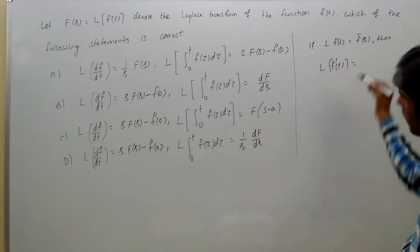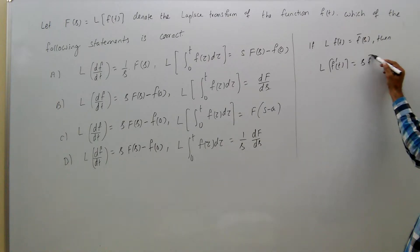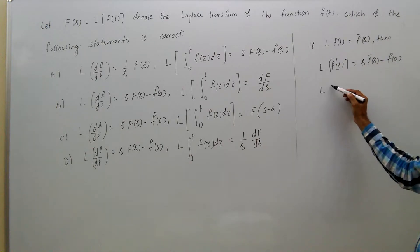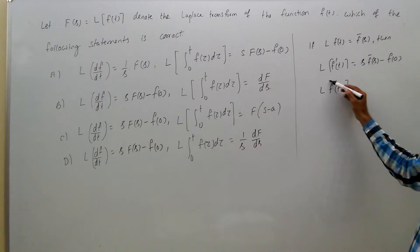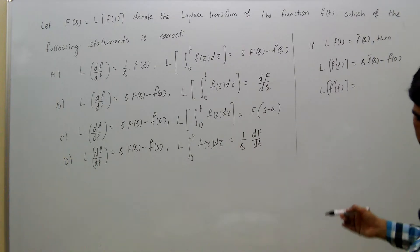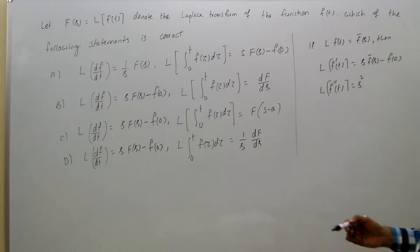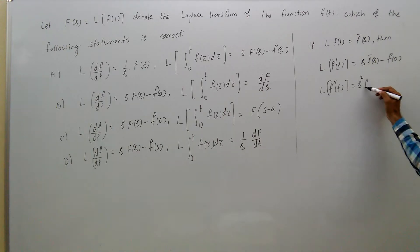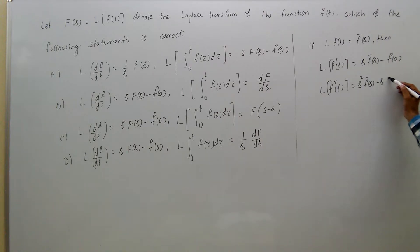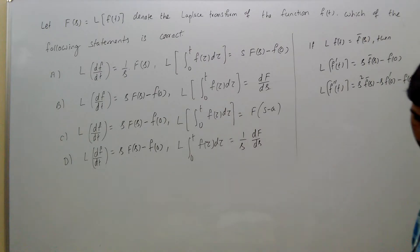If Laplace transform of F of t equals F-bar of S, then Laplace transform of F'(t) equals S times F-bar(S) minus F(0). For the second derivative, Laplace transform of F''(t) equals S-squared times F-bar(S) minus S times F'(0) minus F(0).